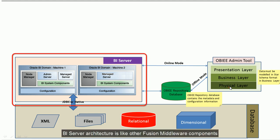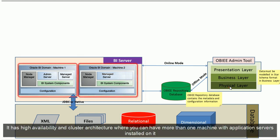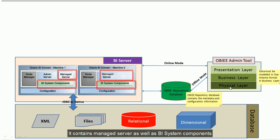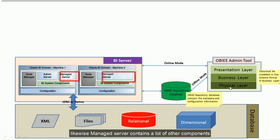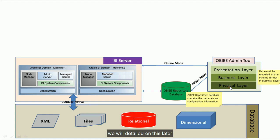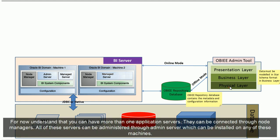The BI server architecture is like other enterprise middleware components. It has high availability and cluster architecture where you can have more than one machine with application servers installed. It contains managed servers as well as BI system components. BI system components is where BI Publisher and similar components are installed. Managed servers contain many other components. You can have more than one application server, and they can be connected through node managers.